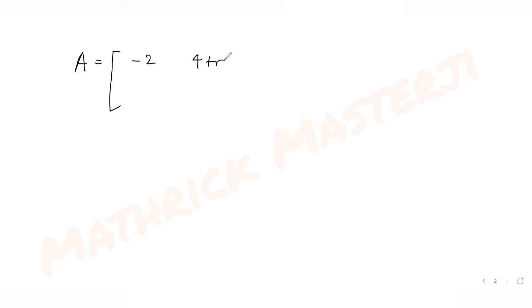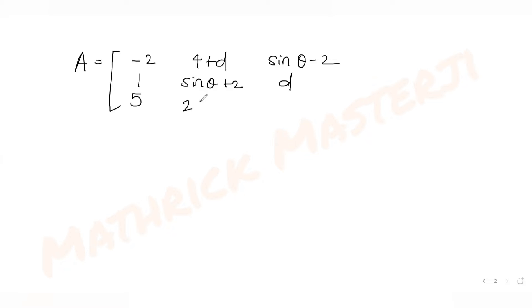The matrix A is given to us as: first column -2, 1, 5; second column 4+D, sinθ+2, 2sinθ-D; third column sinθ-2, D, and -sinθ+2+2D.